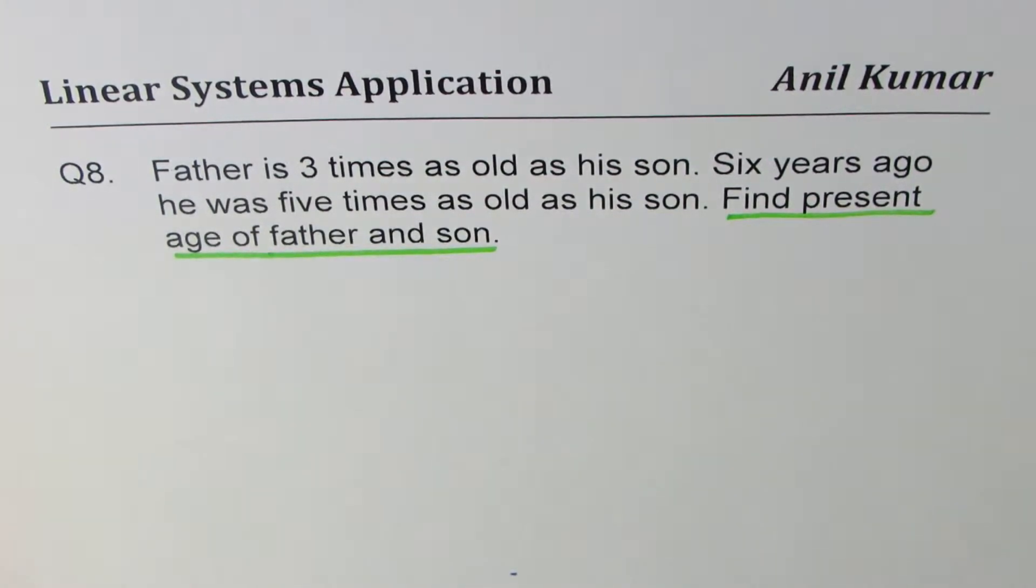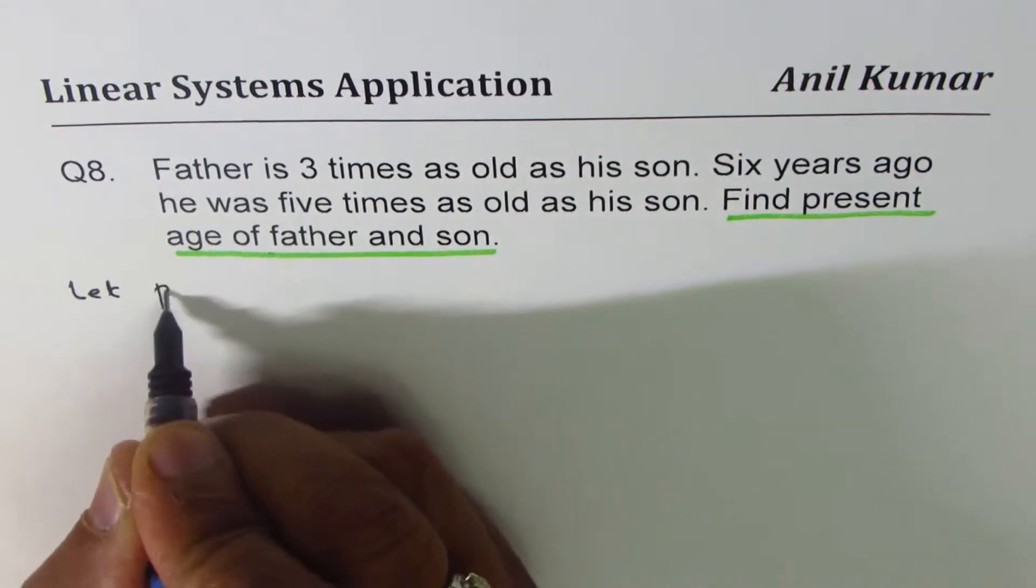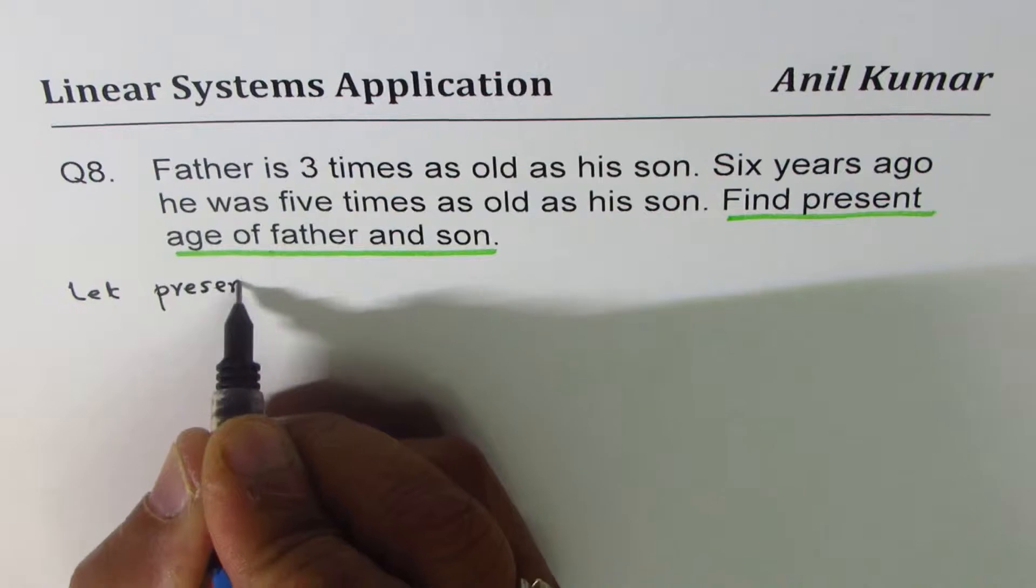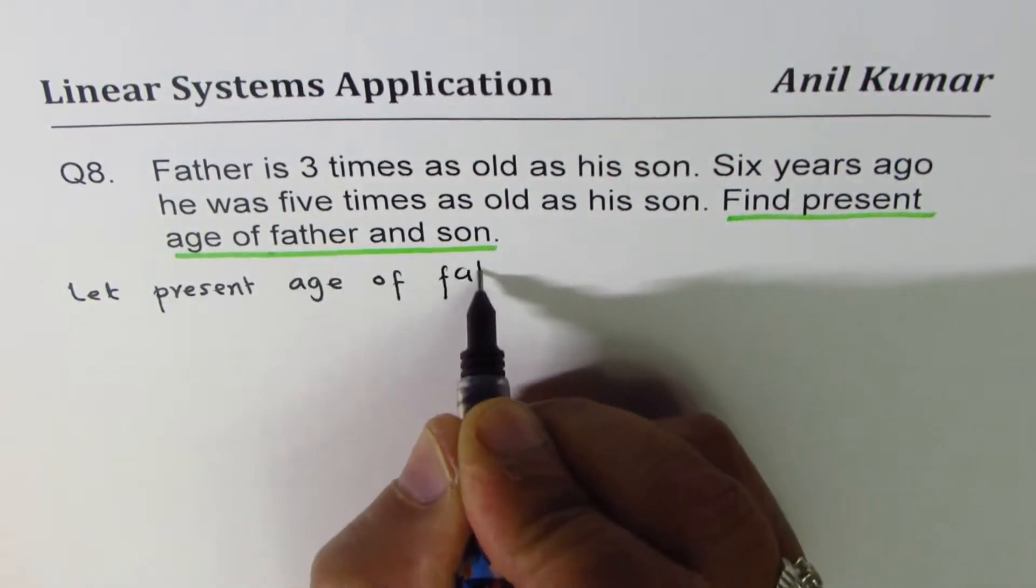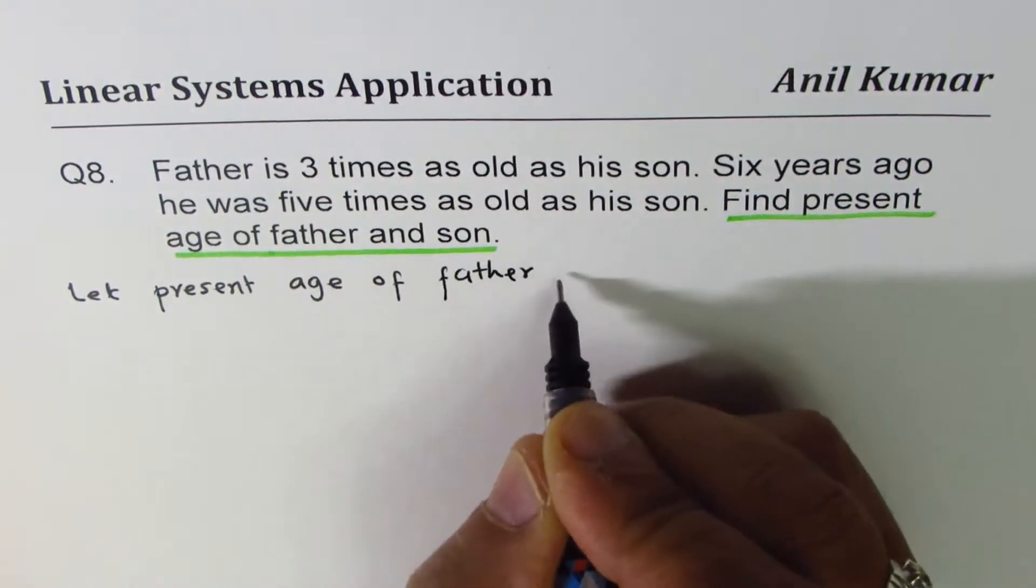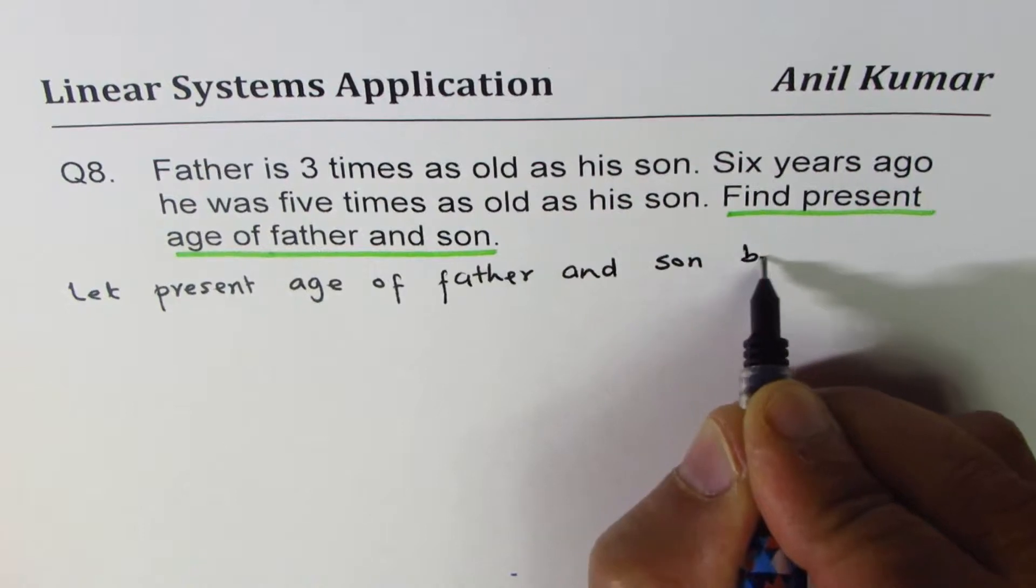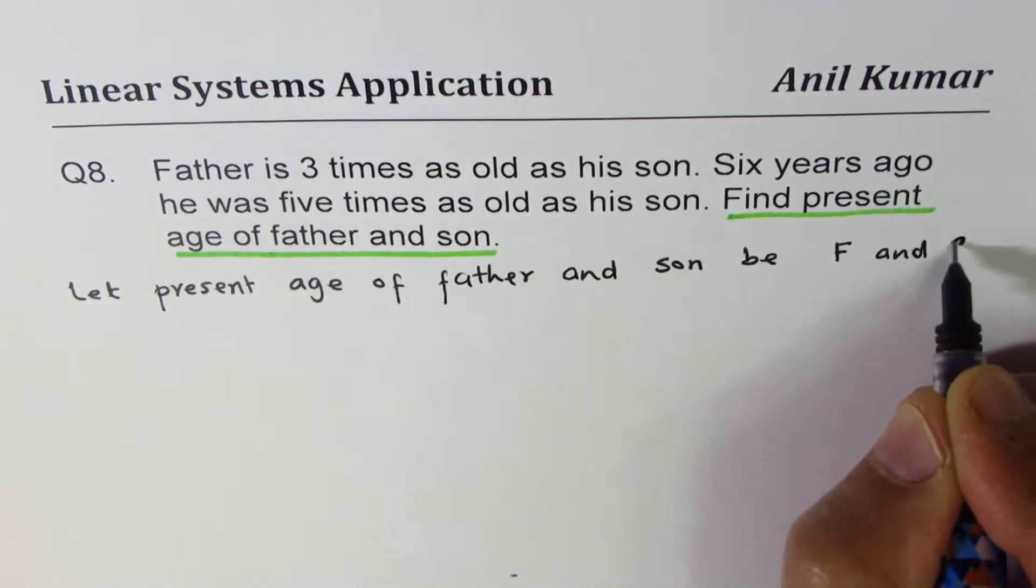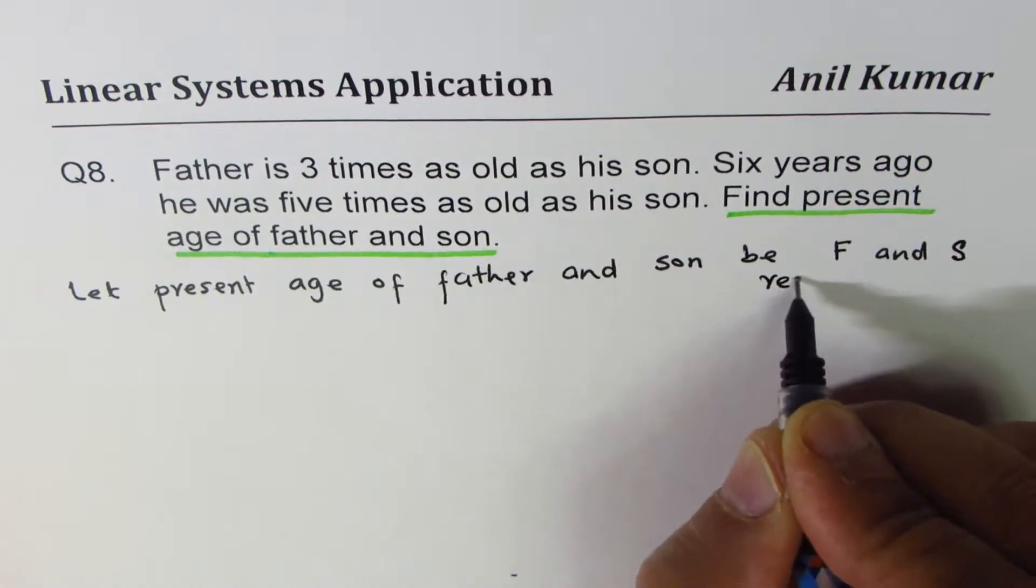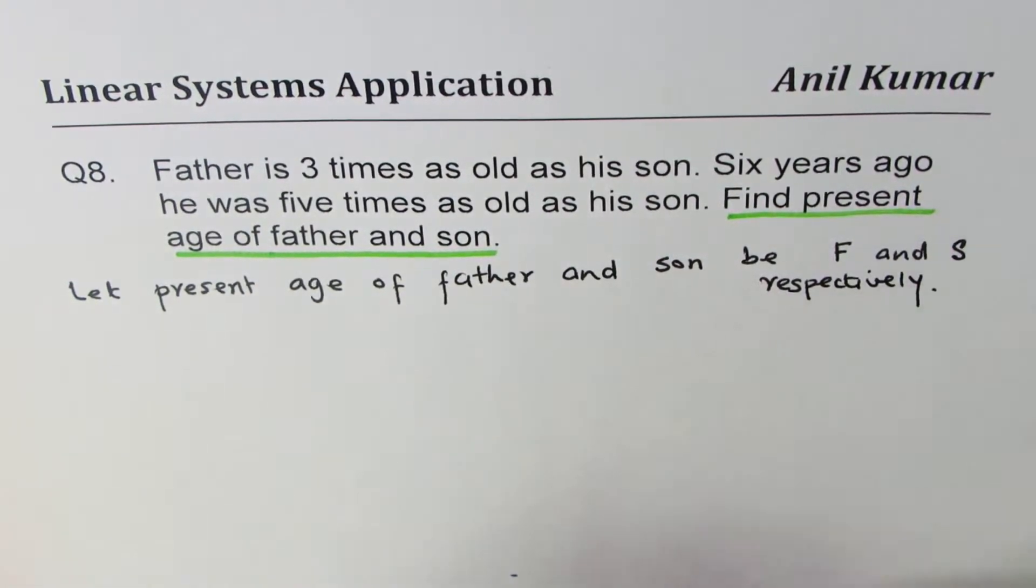We'll start with the let statement. We'll select present age of father and son be F and S respectively. So we'll define our variables.